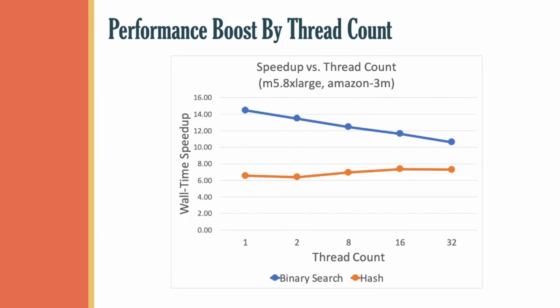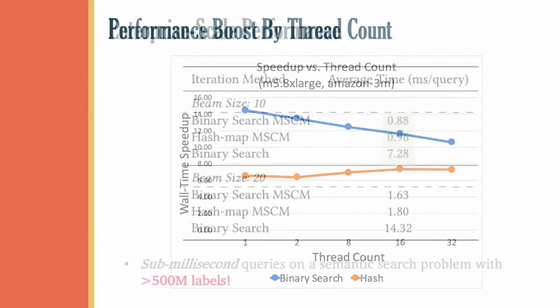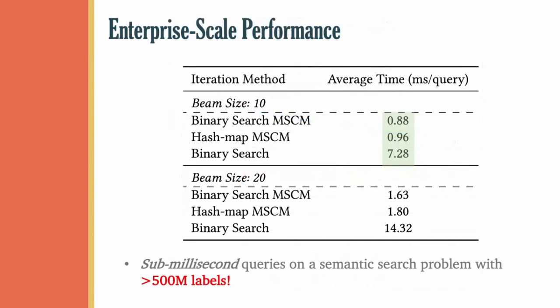Before we conclude this presentation, I would like to make mention of a final benchmark that we performed on a semantic search problem with over 500 million labels. In these benchmarks here, we were able to achieve a sub-millisecond latency with chunked binary search on this real enterprise scale problem. Note on the specific problem that the addition of our chunked matrix technique improves performance by nearly a factor of 10. This demonstrates the scalability of our technique.